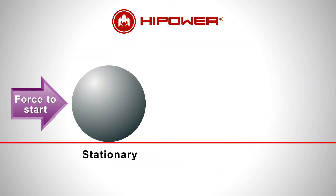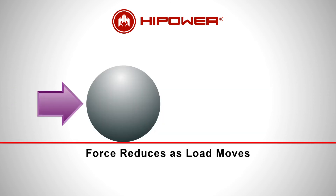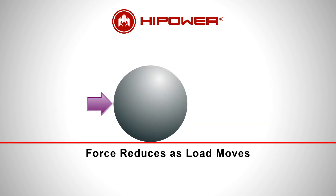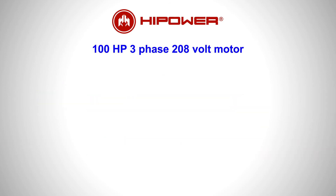As with pushing a load from a stationary position, more force is required initially to overcome inertia. A typical motor can require up to six times the amperage to start as to run the motor. For example, a 100 horsepower three-phase motor, converted to kilowatts by multiplying by 0.746, requires 74.6 kilowatts to run.